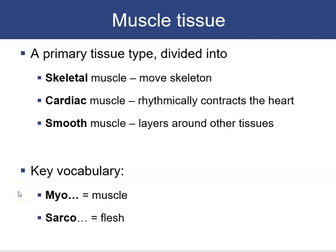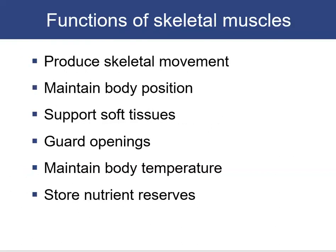Chapter nine looks at muscle tissue, one of the four primary tissues. It is divided into three types: skeletal muscle, which is responsible for moving the bones; cardiac muscle, which rhythmically contracts the heart; and smooth muscle, which forms layers around other tissues. Key vocabulary: 'myo' in a word refers to muscle, and 'sarco' refers to flesh.